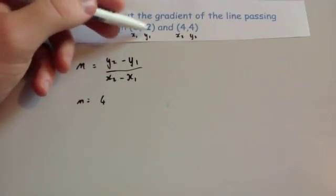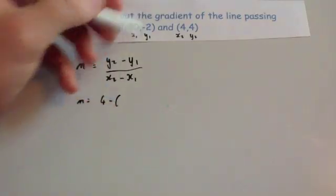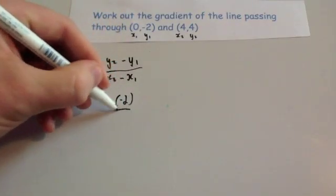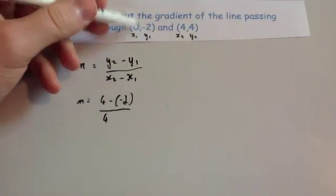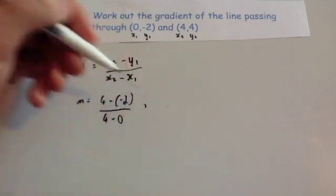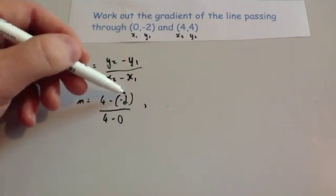Minus y1, well y1 is minus 2, so that's going to be minus minus 2, divided by x2, 4, minus x1, which is 0.